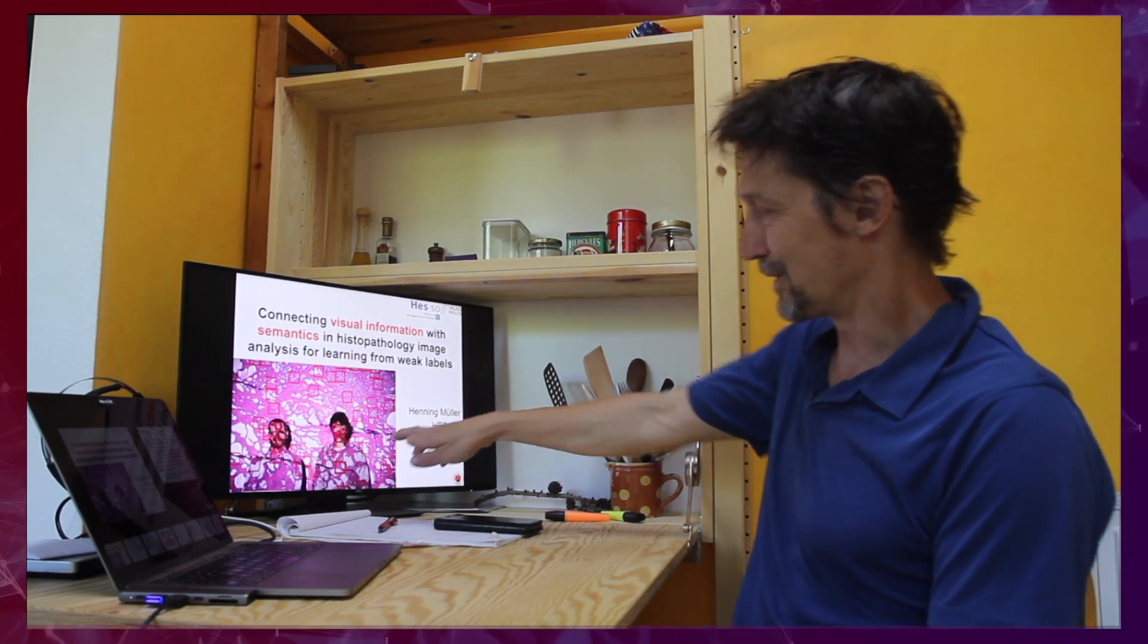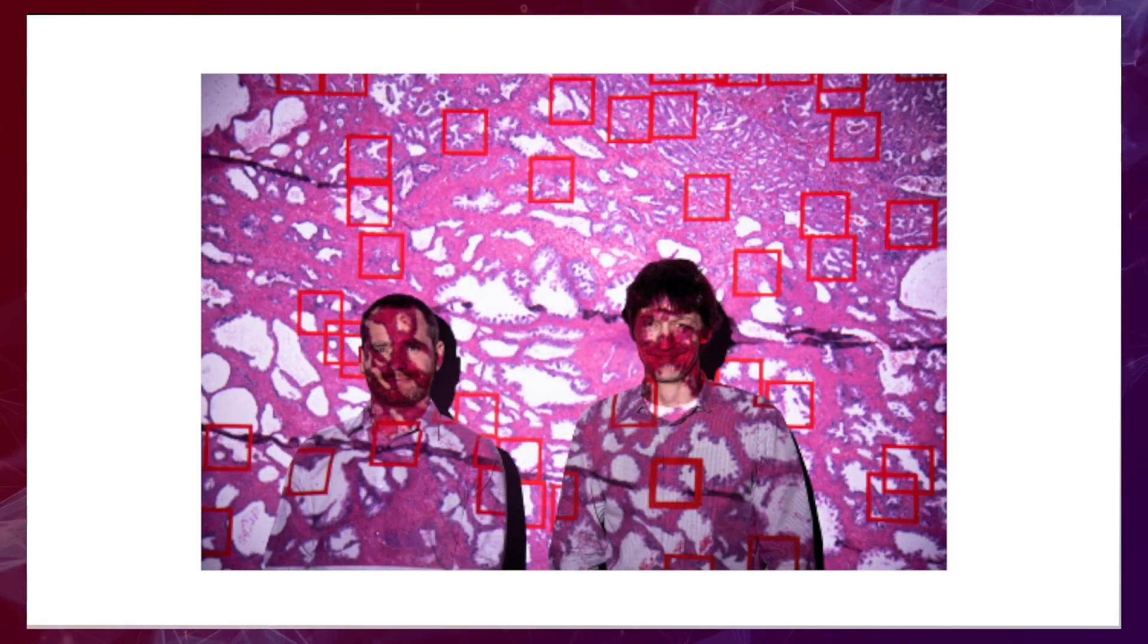And I start the presentation with a strange picture where you can see me and Manfredo Azzori actually fighting cancer cells. So this is a histopathology image. These images are huge. They're 100,000 by 100,000 pixels and it is something that is difficult to process and analyze manually under a microscope but also for a computer algorithm.